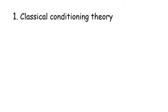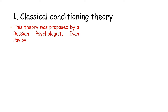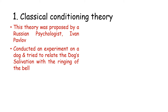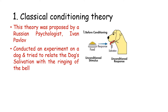Let us first understand classical conditioning theory. Classical conditioning is one of the simplest forms of learning. This theory was proposed by a Russian psychologist Ivan Pavlov. He explained the classical conditioning theory based on his experiment on a dog and tried to relate the dog's salivation with the ringing of a bell. In the first phase of the experiment, when Pavlov offered food to the dog, he noticed a great deal of salivation. Here, food is an unconditioned stimulus and salivation is an unconditioned response. It is natural for a dog to salivate whenever food is offered to him.